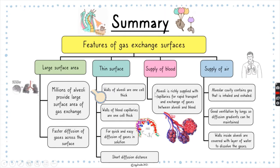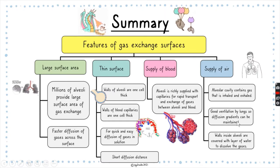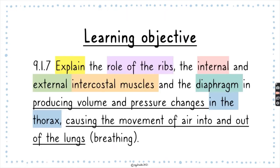There is also a rich supply of blood, provided by capillaries surrounding the alveoli, which makes transport and exchange of gases more rapid. We also need a supply of air — the alveolar cavity contains gas that is inhaled and exhaled. Good ventilation by the lungs maintains a diffusion gradient for gas exchange, and the walls inside the alveoli are covered with a layer of moisture that helps dissolve gases so they can be exchanged.